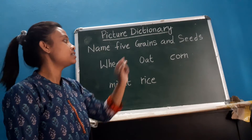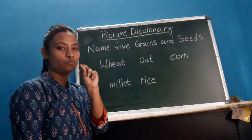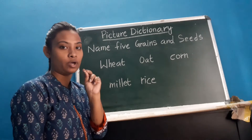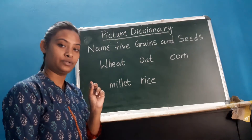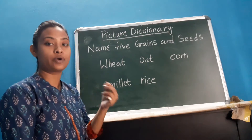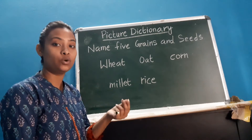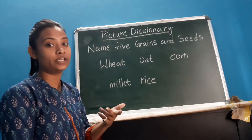Grains and seeds are very small, tiny ones. They are colorful — some are brown, some are yellow, some are orange.